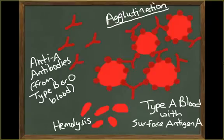For instance, an anti-A antibody that encounters A surface antigens will cause the red blood cells bearing those surface antigens to clump or break up. These clumps can plug small blood vessels in the kidneys, lungs, heart, or brain, damaging or destroying affected tissues.